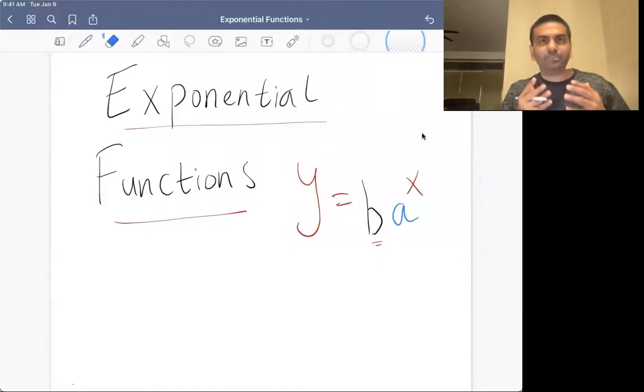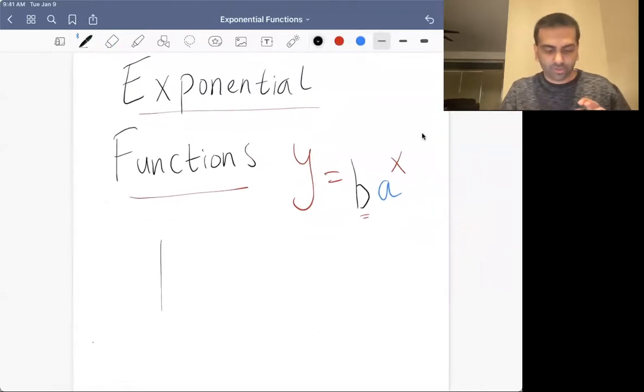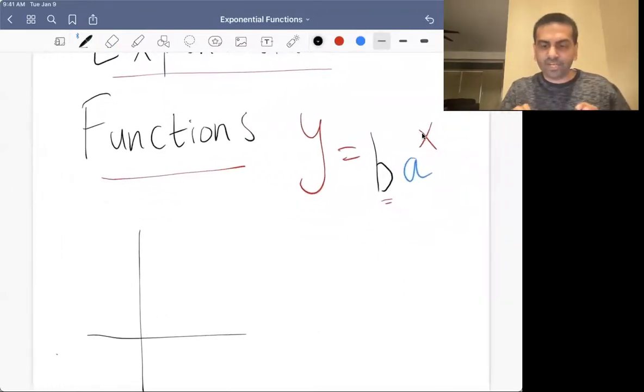In this video, we're going to talk about exponential functions. So comparing it to something you already know, you're already familiar with linear functions. Linear functions have this initial value called b, that's the y-intercept, and they grow by the same amount for every time x goes up by one, that's the slope m.